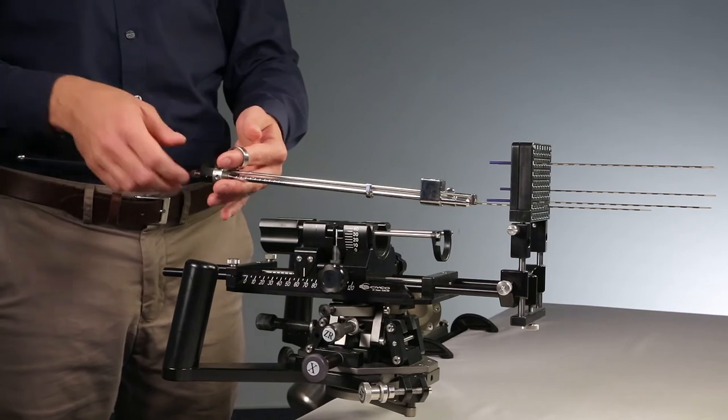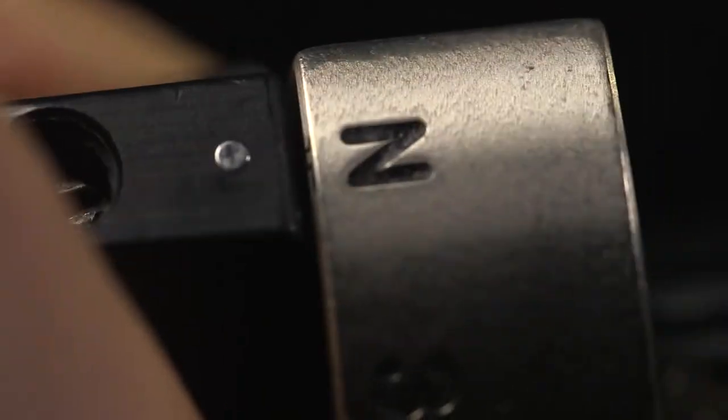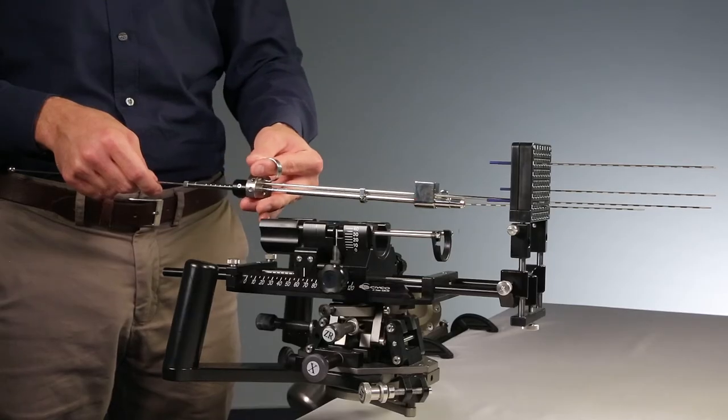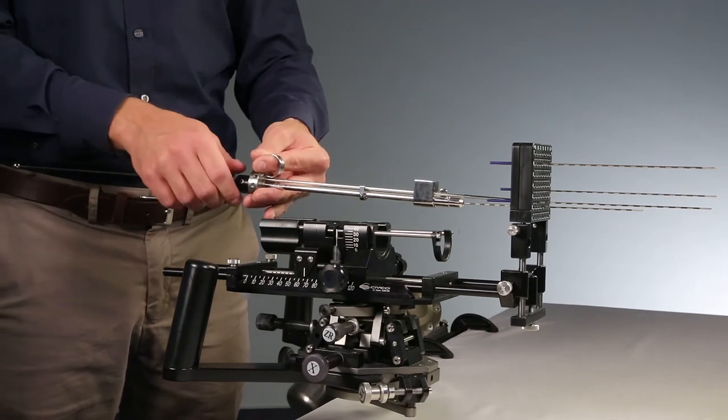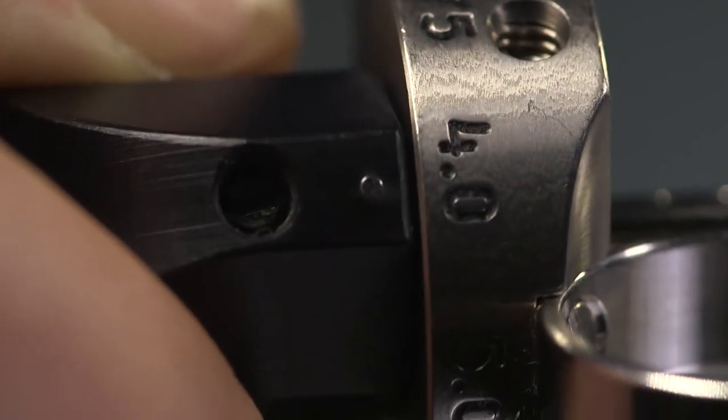Afterwards, set the seed spacing selector to the neutral position N and advance the template wing forward until it flushes against the template grid. Now, you can reset the seed spacing selector to the desired seed spacing pattern.